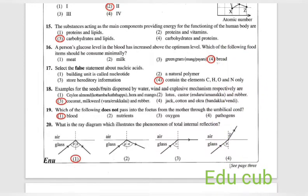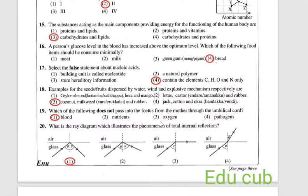Fifteenth question: the substances acting as the main components providing energy for functioning of human body are proteins and lipids, proteins and vitamins, carbohydrates and lipids, or carbohydrates and proteins. Answer is the third one, carbohydrates and lipids. They are the main components providing energy for the functioning of human body.